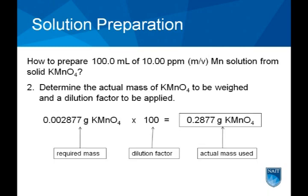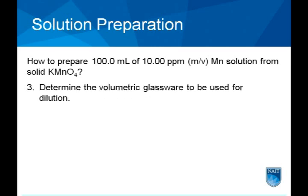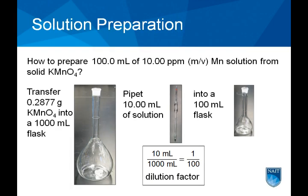The simplest approach is to weigh out 100 times more sample than required and then dilute the solution by a factor of 100. The simplest and most accurate method to perform a dilution is to dissolve the calculated mass of potassium permanganate in 1000 milliliters and then transfer a 10 milliliter aliquot into the final solution volume of 100 milliliters.